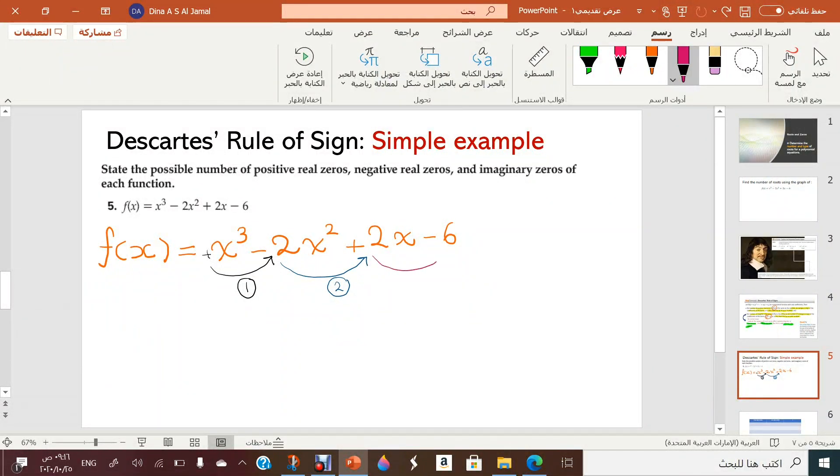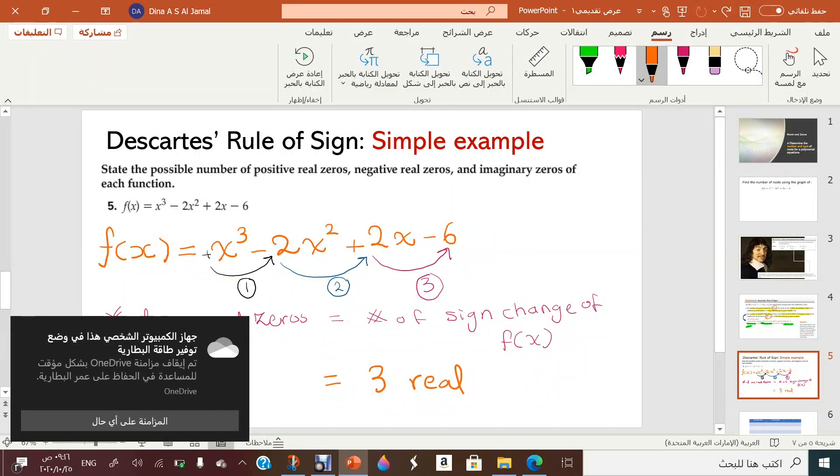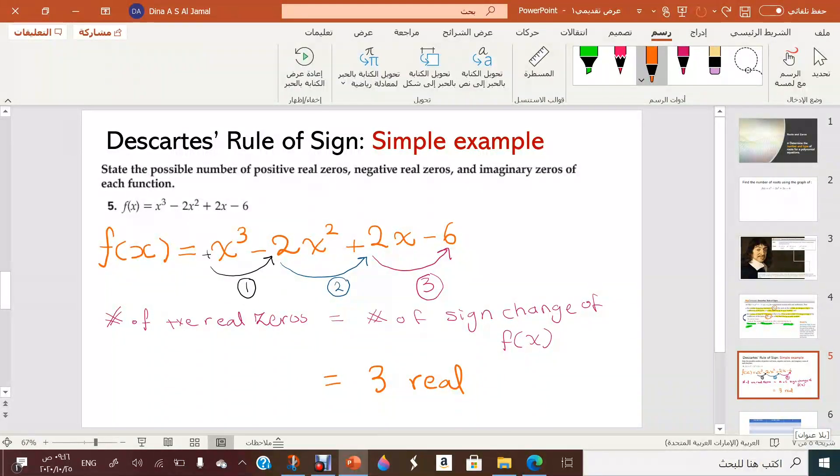Then we have from positive to negative another sign change. So he is telling you the number of positive real zeros is the same as the number of sign change of f of x. So now let's count together how many positive real zeros we have: three real and positive zeros.